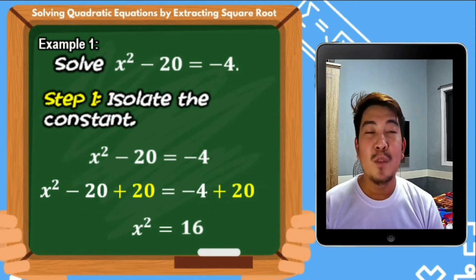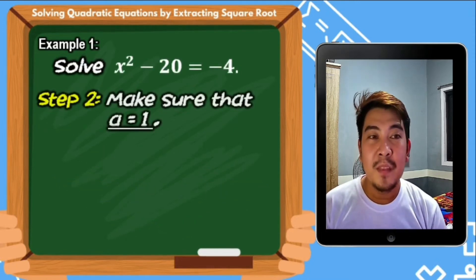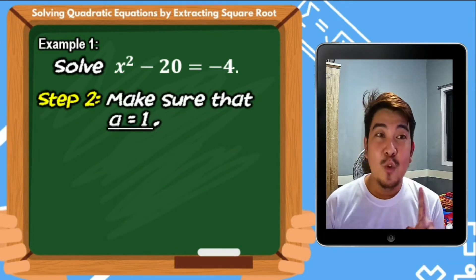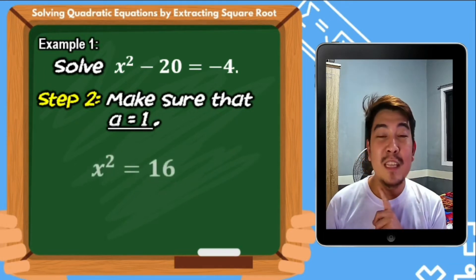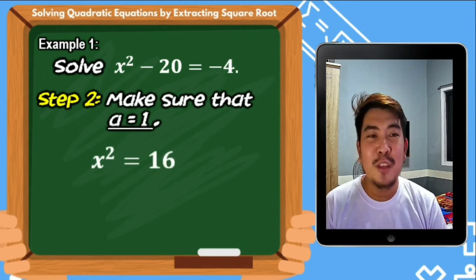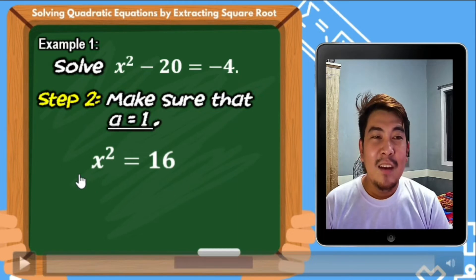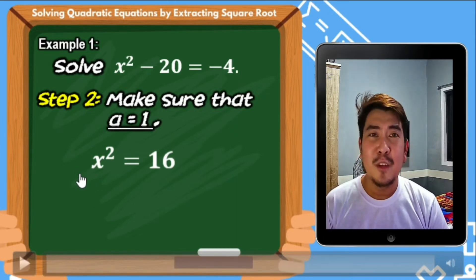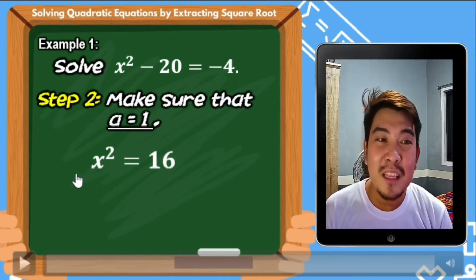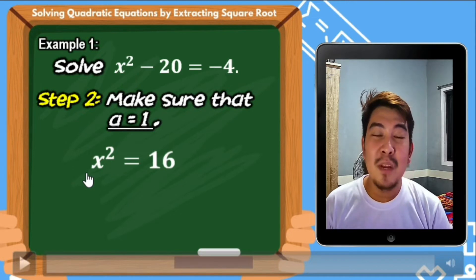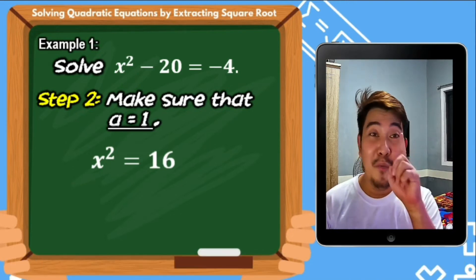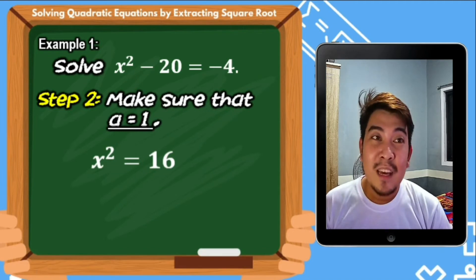Step number 2: we should make sure that the value of A equals 1. Looking at our equation, what is the numerical coefficient of x squared? There is no visible number, so automatically the value is 1. So we're done with that step and we proceed to step number 3.